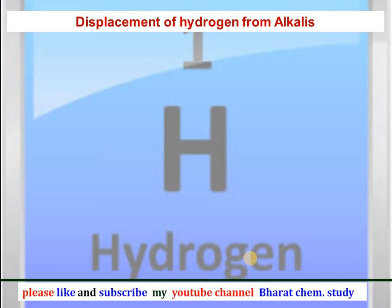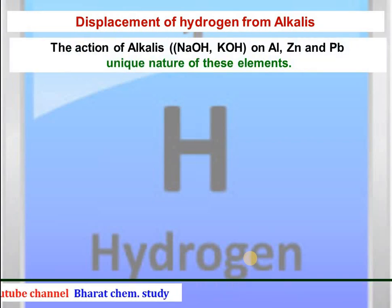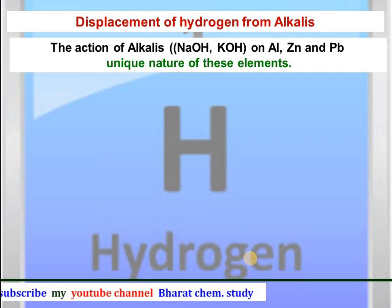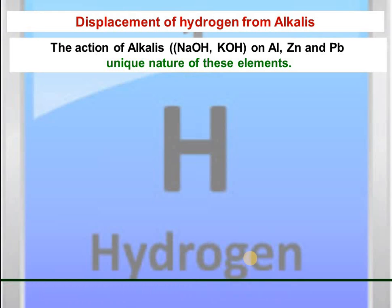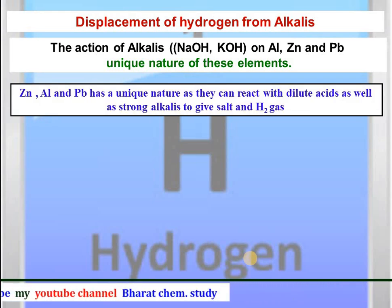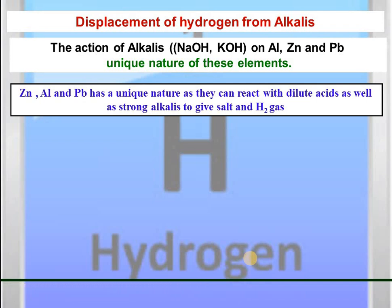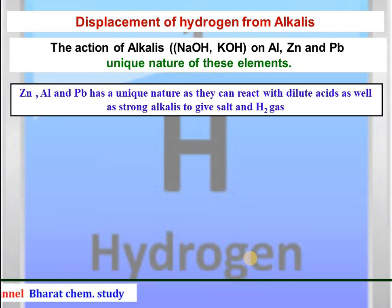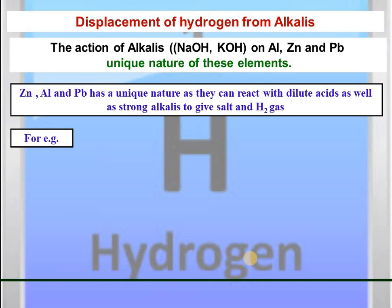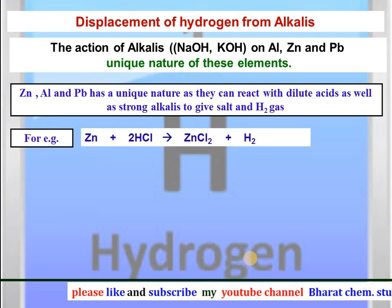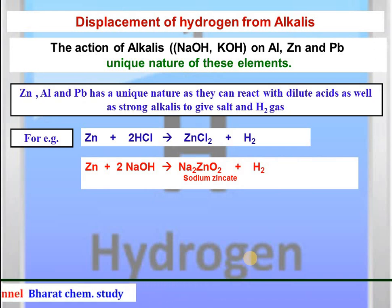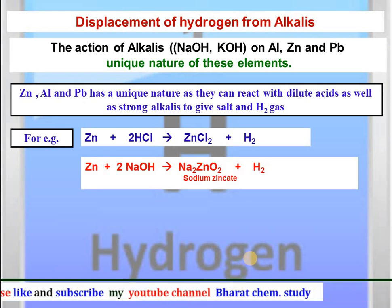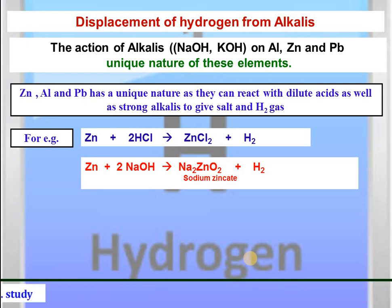Displacement of hydrogen from alkalis — that is, the reaction of alkalis with metals like aluminium, zinc, and lead — is a unique feature of these elements, which we have also studied in the previous chapter on chemical reactions. Zinc, aluminium, and lead have the unique feature that they can react with dilute acids as well as strong alkalis to give a salt and hydrogen gas. For example, zinc reacts with HCl to produce zinc chloride and hydrogen gas. Similarly, zinc can react with strong alkalis like NaOH or KOH to form sodium zincate (Na2ZnO2) and hydrogen gas.